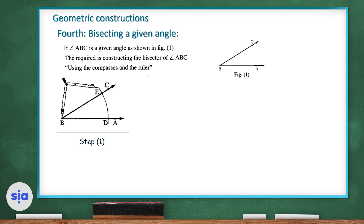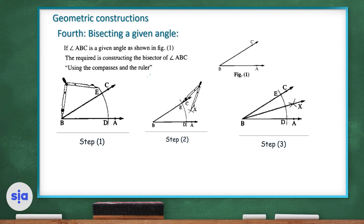After that, with the same opening of the compass, put the pin at point E and make an arc, then put the pin at point D and make another arc. The two arcs from E and D must meet each other, forming point X. To draw the bisecting ray, connect point B and X — so BX is the bisecting ray, and angle CBX equals angle XBA.